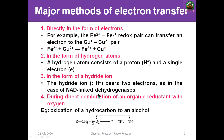The third method is transfer in the form of a hydride ion (H:−), which carries two electrons. In biological biochemistry, this is seen in NAD dihydrogenase reactions. The fourth method is during the direct combination of an organic reductant with oxygen. For example, oxidation of a hydrocarbon to an alcohol: R-CH3 plus half O2 gives R-CH2-OH, that is ethanol. One oxygen from O2 is transferred to the organic molecule to form ethanol.